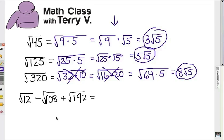Now hit pause and try this last one and see if you can simplify those radicals, then subtract and add. Good luck. All right, I'm going to rewrite radical twelve as radical four times three, because four is a perfect square. And how about one-oh-eight as being thirty-six times three? Let's think of it like that.